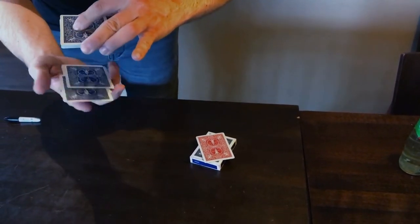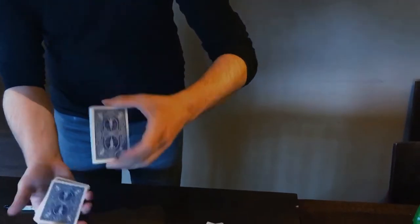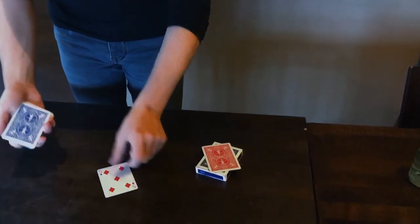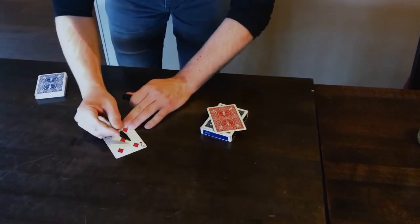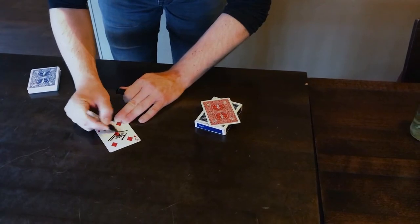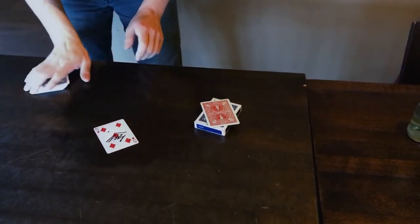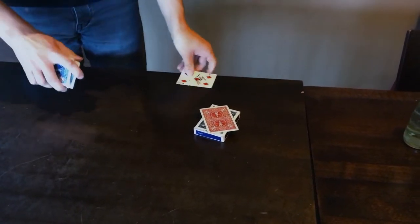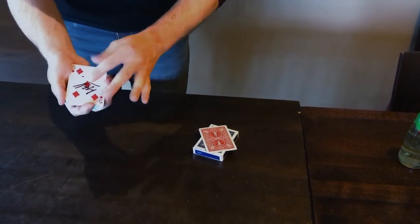The spectator says stop, and we can sign the card. I'll put 'Mel' on it, which is your name, and we're gonna lose your card anywhere inside the middle of the pack.